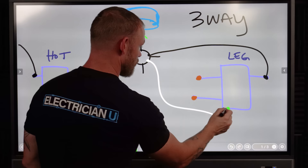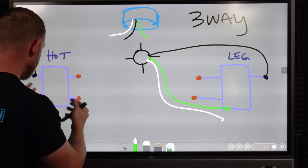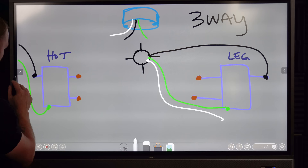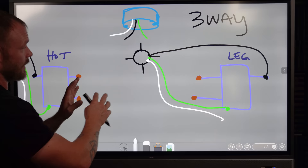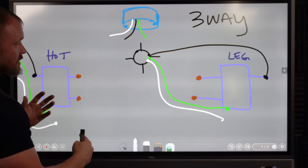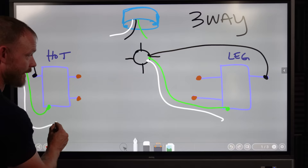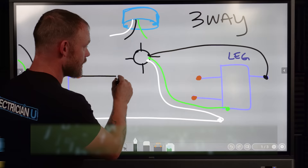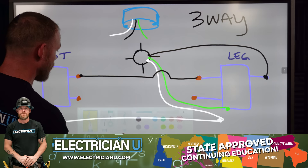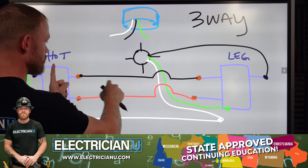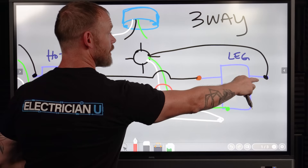On the leg side, everything goes up to the light. Incoming, we've got our hot, our ground, and a white that's not hooked up to anything — just in the box. In order for this white to make it up to the light, we have to run something in between. We run what's called a traveler, usually with 12-3, which is a black, red, and white inside a single piece of Romex. The white gets connected to this white, the black connects to one of the travelers — it doesn't really matter which.